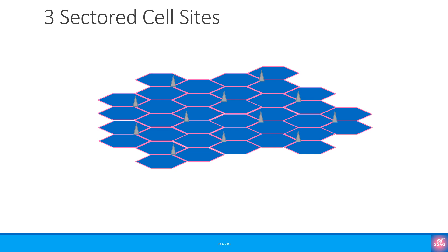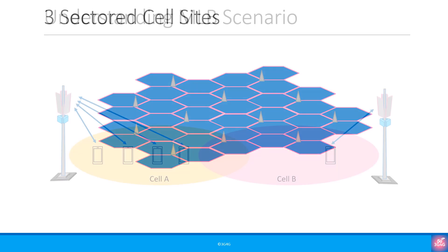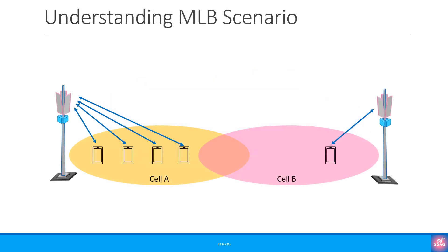As mentioned in the introductory video, even though in theory we have a base station with an omnidirectional antenna, in practice we always have three-sector cells as a minimum. So let's say we have cell A and cell B. Cell A is reasonably busy while cell B isn't. When a UE being served by cell A moves to the overlapping area between cell A and B, it would make sense to hand over the UE to cell B.